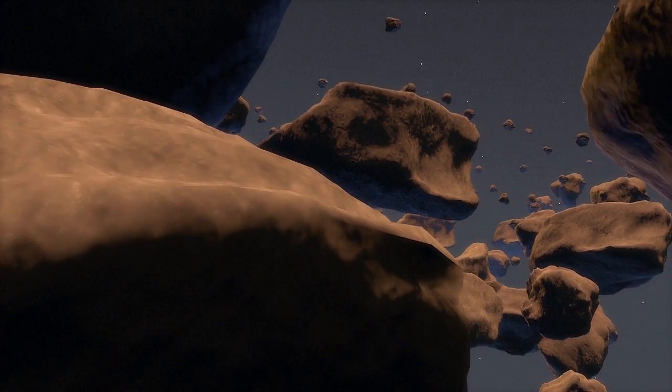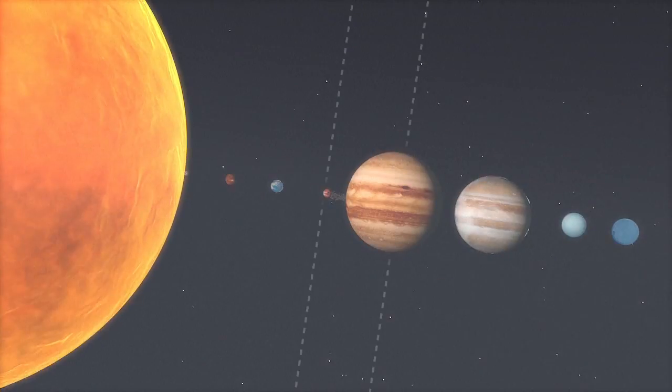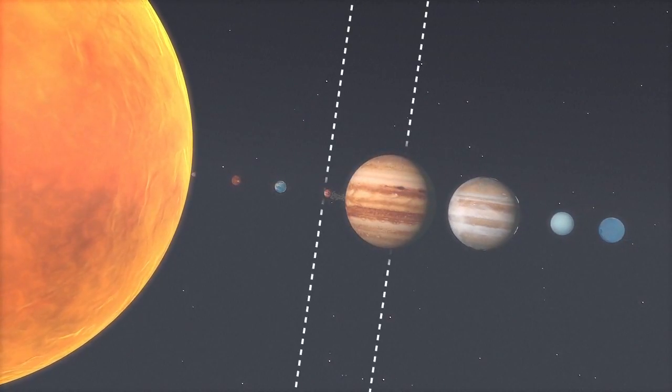Meteorites are mostly fragments of asteroids that gravitate between Mars and Jupiter. Some are particularly rare, from the Moon or even Mars.